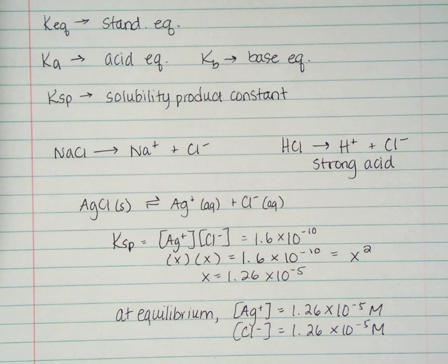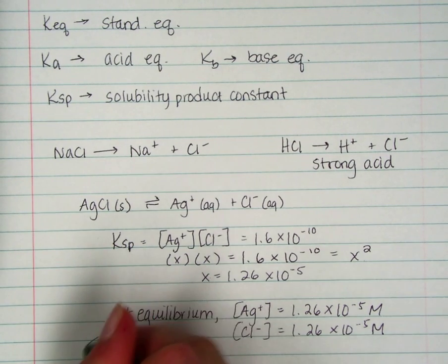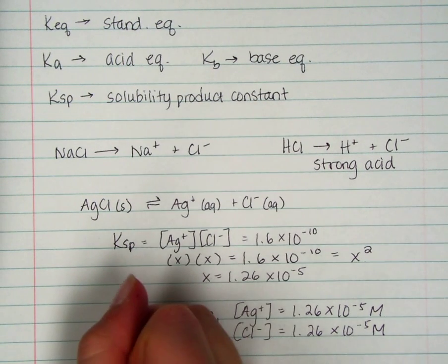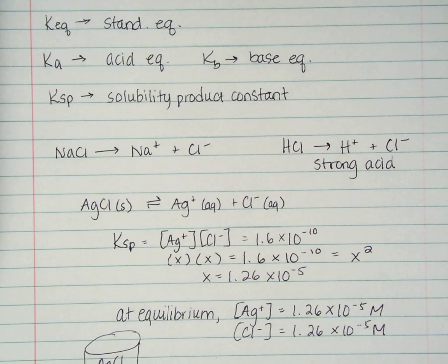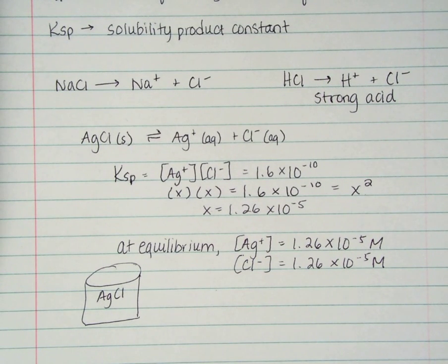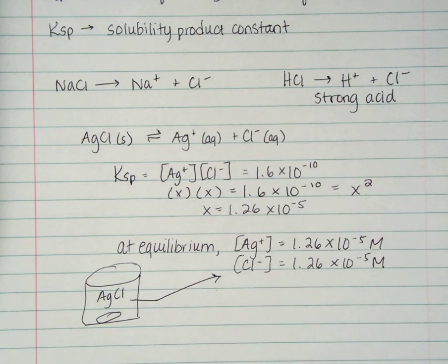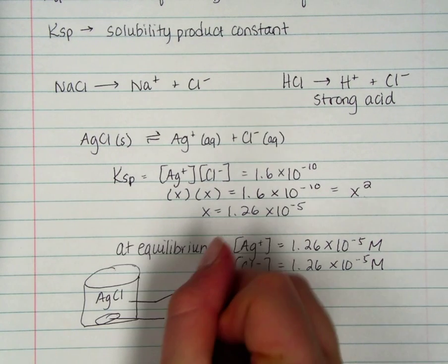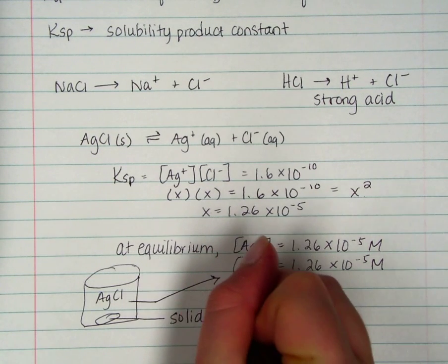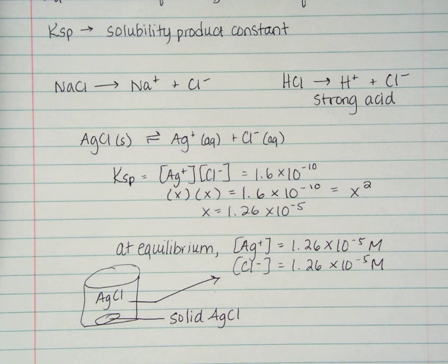So when I put a beaker of AgCl in water out on the counter, in it, I'm going to have a whole bunch of solid AgCl that's not dissolving. But I am going to have, in the solution, these concentrations as well. So not only do I have the solid AgCl at the bottom, but just a tiny bit has dissolved into the Ag+ and Cl-.